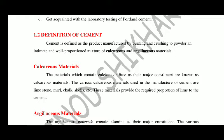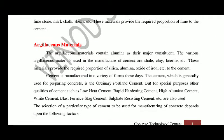The calcareous materials are those in which the percentage of calcium is higher. The argillaceous materials contain alumina as their main ingredient. Various argillaceous materials include shell, clay, and similar materials. These materials provide the thick proportion of silica, alumina, and iron oxide to the cement.